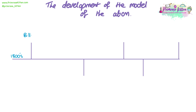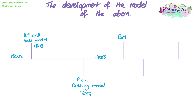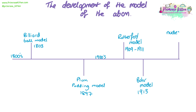The first model we'll look at is the billiard ball model, suggested by John Dalton in 1803. Next is the plum pudding model, suggested in 1897. We then move into the 1900s with the Rutherford model, proposed in 1909 to 1911. The Rutherford model was then adapted by the Bohr model in 1913. Finally, we come to the nuclear model, developed partially by James Chadwick and others, starting in 1932 and still being adapted today.